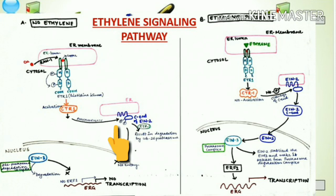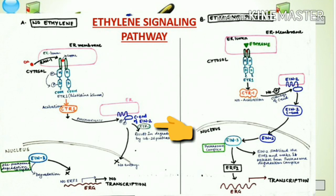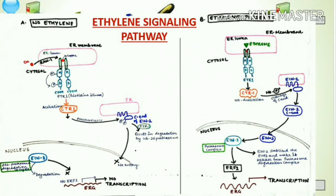EIN2 is an important transmembrane protein located in the ER membrane, having a transmembrane domain as well as a C-terminal (CN) domain. CTR1 phosphorylates the CN of EIN2. The phosphorylation of the CN of EIN2 activates the ETP1 protein — the EIN2 Targeting Protein — which is an F-box protein causing ubiquitination of EIN2 and its degradation by the 26S proteasome degradation pathway.